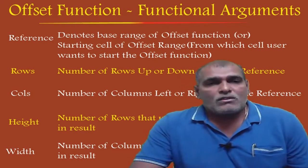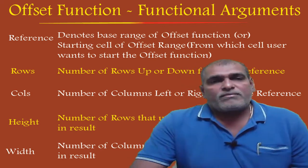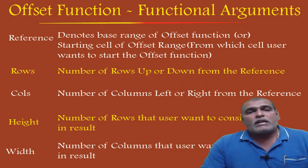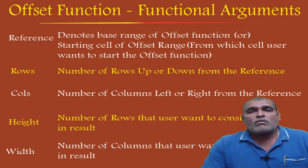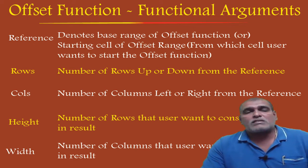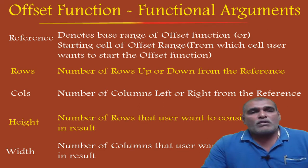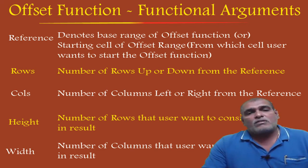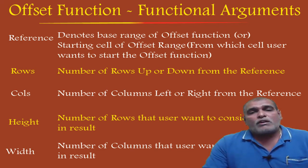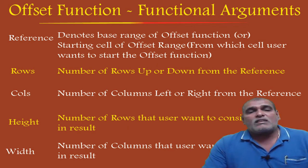The second one is rows. It denotes the number of rows up or down from the reference. The third one is columns. It denotes the number of columns left or right from the reference cell.